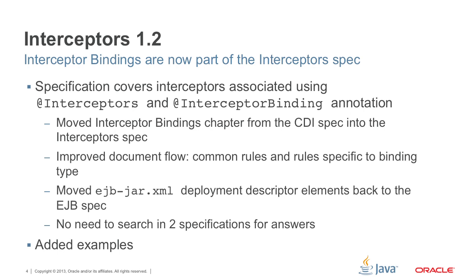Interceptor bindings are now part of the interceptor spec, so we revamped the spec by reorganizing it and making it a single place where you can go and read about interceptors. The interceptor binding chapter has been moved from the CDI spec into the interceptor spec. The spec was separated into clearly defined chapters instead of a single chapter — now it has five — with common rules being common and binding-type-specific rules clearly defined separately. We moved EJB-JAR XML deployment descriptor elements back to the EJB spec where they belong, and beans.xml details stayed in the CDI spec. It is a single document for everything interceptors; you don't need to search two or three documents for answers.